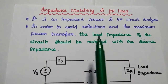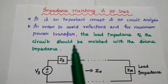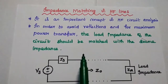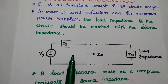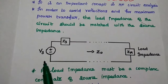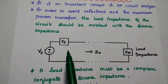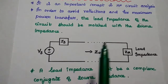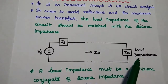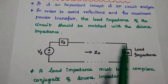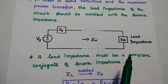In order to avoid reflections and for maximum power transfer, the load impedance of the circuit should be matched with the source impedance. This is the general diagram of a transmission line with source VS. ZS represents the source impedance, which is the input impedance. ZR represents the receiving end impedance, also known as load impedance. Z0 is the characteristic impedance of the transmission line.